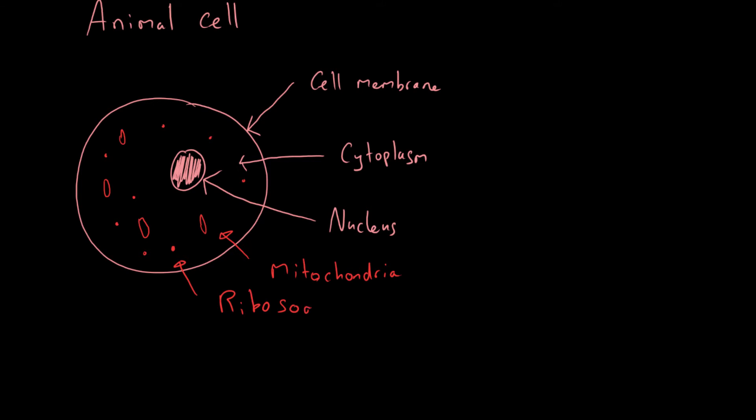Mitochondria is where we get energy out of our food - glucose is broken down there and energy is released. The smaller dots in the cytoplasm are known as ribosomes, and ribosomes are where protein synthesis happens - where proteins are made. Proteins are important for almost every process in the cell, including enzymes. No ribosomes means no proteins.